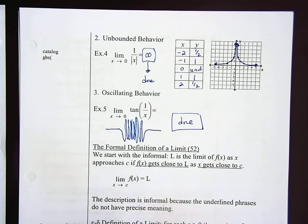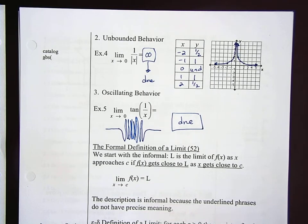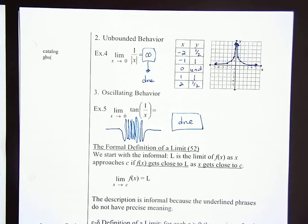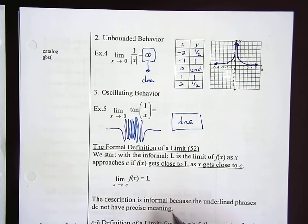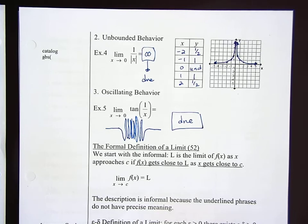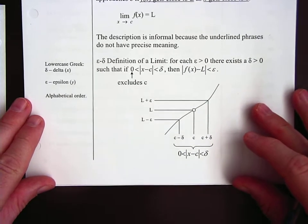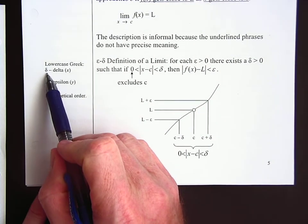The formal definition of limits — it should make sense that phrases like 'getting really close to' are not very mathematical or firm as a definition. We need something more specific. These underlined phrases have no precise meaning. What does 'get close to' mean? That's different for everyone — like someone standing too close to you, we all have a different boundary for that.